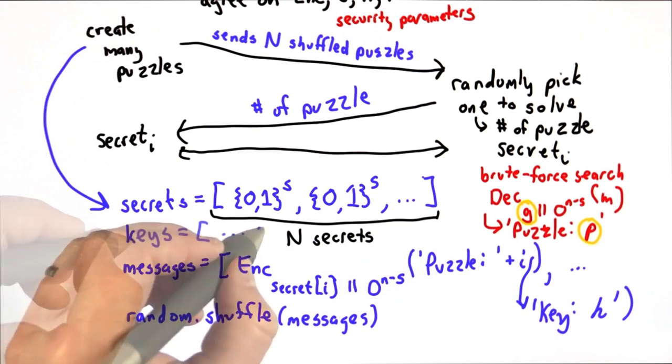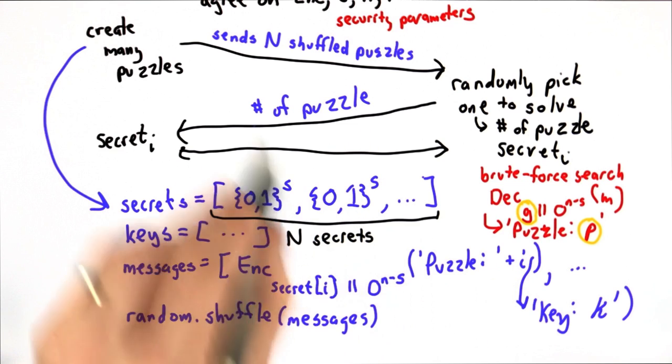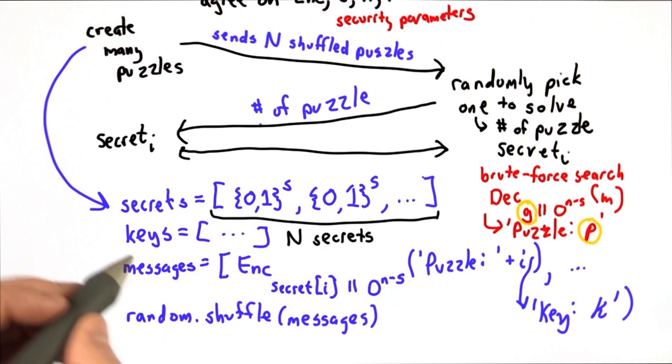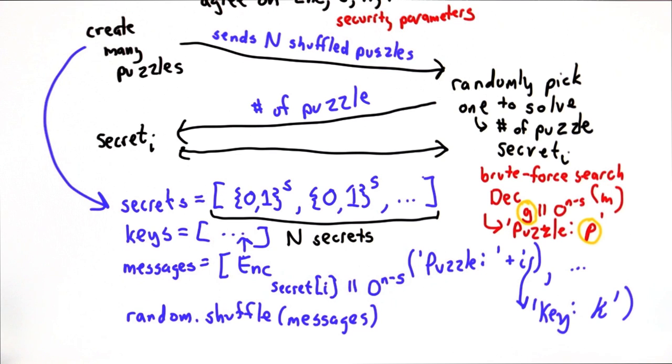Alice would keep track of those keys, and so for each puzzle, when Bob decrypts it, he acquires both the puzzle number and the key number, and sends the number of the puzzle back to Alice. Alice can look up in her keys and figure out which key was the one in the puzzle Bob decrypted.